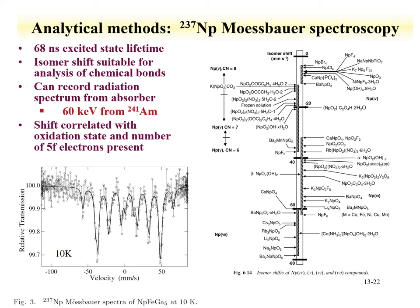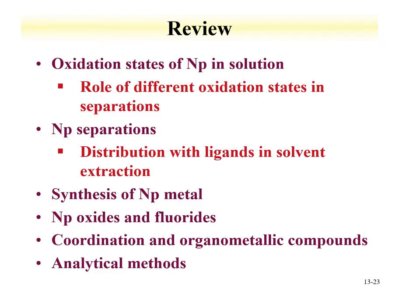Mössbauer spectroscopy, which was reviewed during the gamma spectroscopy lecture, can be used with americium-241 excitation to identify different neptunium species through its Mössbauer spectrum. In summary, this lecture discussed the role of oxidation states of neptunium in solution, how those oxidation states can be adjusted, and how it influences the chemistry — particularly separation chemistry. The main point is that neptunium-5 is the dominant oxidation state in solution; however, it can disproportionate over time to neptunium-6 and neptunium-4, where both these oxidation states can be extracted.